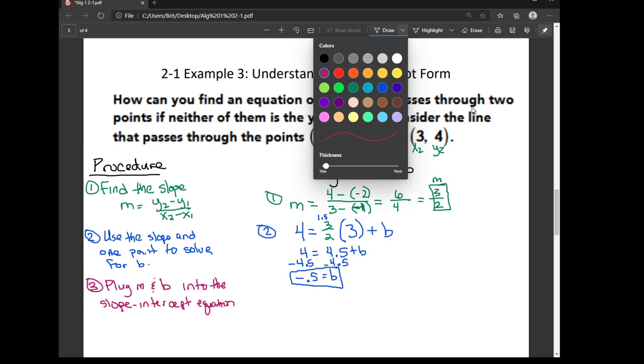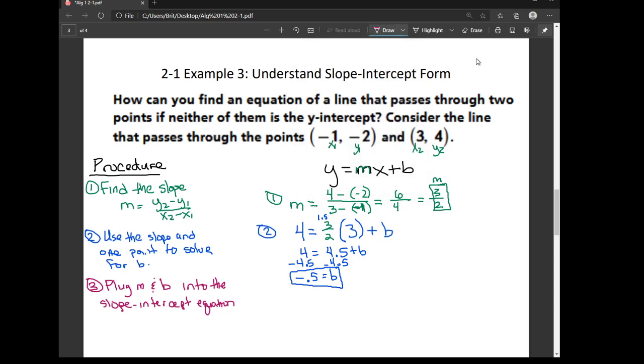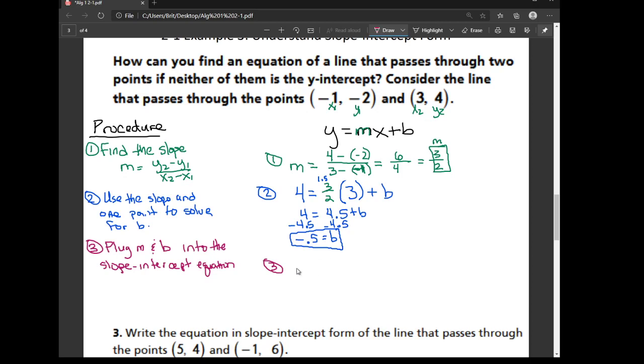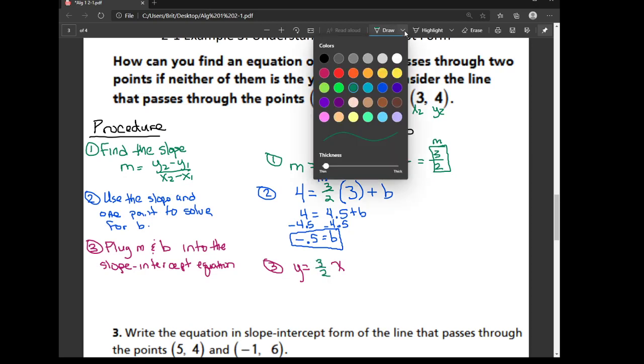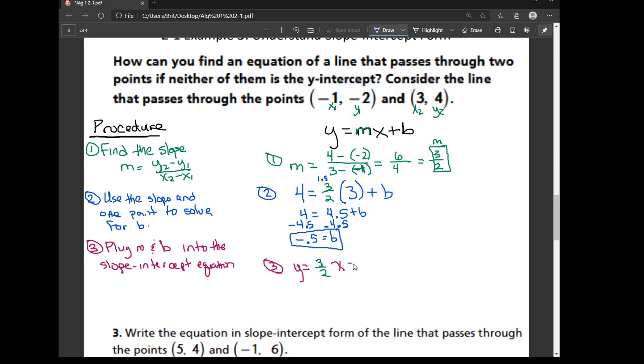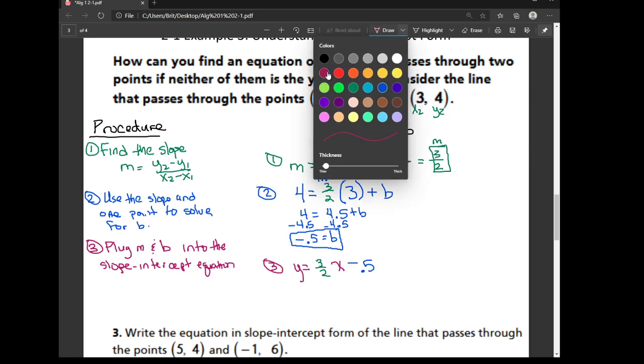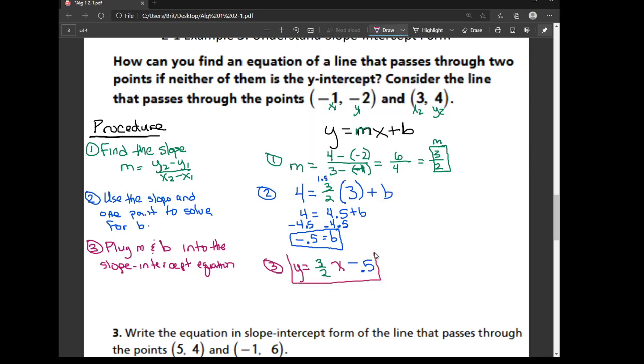So now step 3 in my procedure is just to go ahead and plug in those values into our equation. So I have y equals, and I'm going to leave a space for m, times x, and then I leave my space for b. My m, we said was 3 halves, so I'm going to put that right there in front of the x. And my b is a negative 0.5. And there we have it. There's that equation written in slope intercept form.